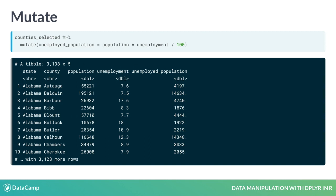Notice that the new data set has the variable unemployed_population added to it. You got to choose the name of this variable by putting unemployed_population before the equal sign.